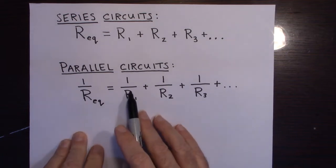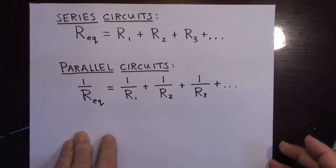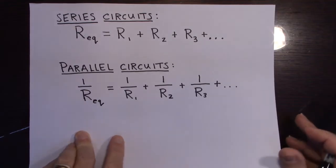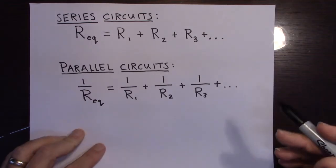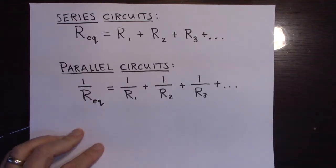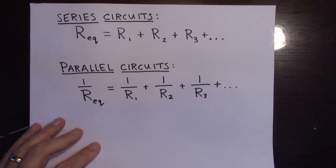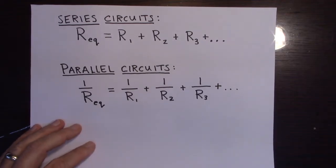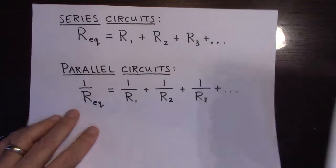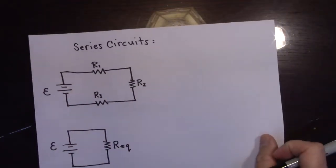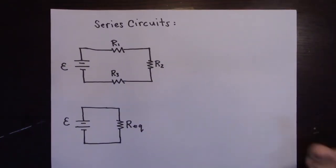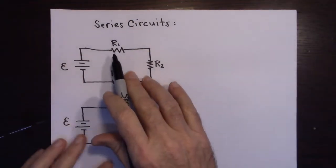We're going to be using Kirchhoff's rules to derive this, so hopefully you're familiar with Kirchhoff's junction rule and the loop rule. If not, you might want to go watch those first. Let's start with the series circuit.